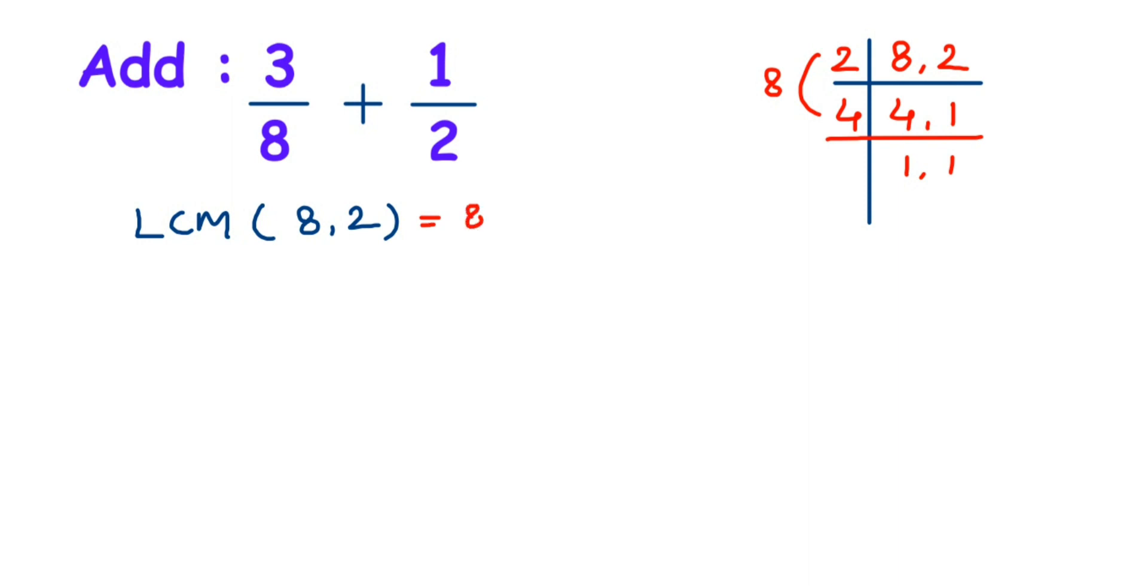Now here I'm going to make the denominators 8, so I have to find out the equivalent fraction of these numbers to make the denominator 8. We have to find out the equivalent fraction of these numbers with the denominator 8. In the first fraction, we already have 8 in the denominator, so we don't have to do anything with that.